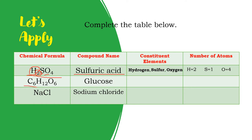For number two, the chemical formula is C6H12O6. The name of that compound is glucose. The constituent elements are carbon, hydrogen, and oxygen. For the number of atoms: carbon has six, hydrogen has twelve, and oxygen has six — look at the subscripts.